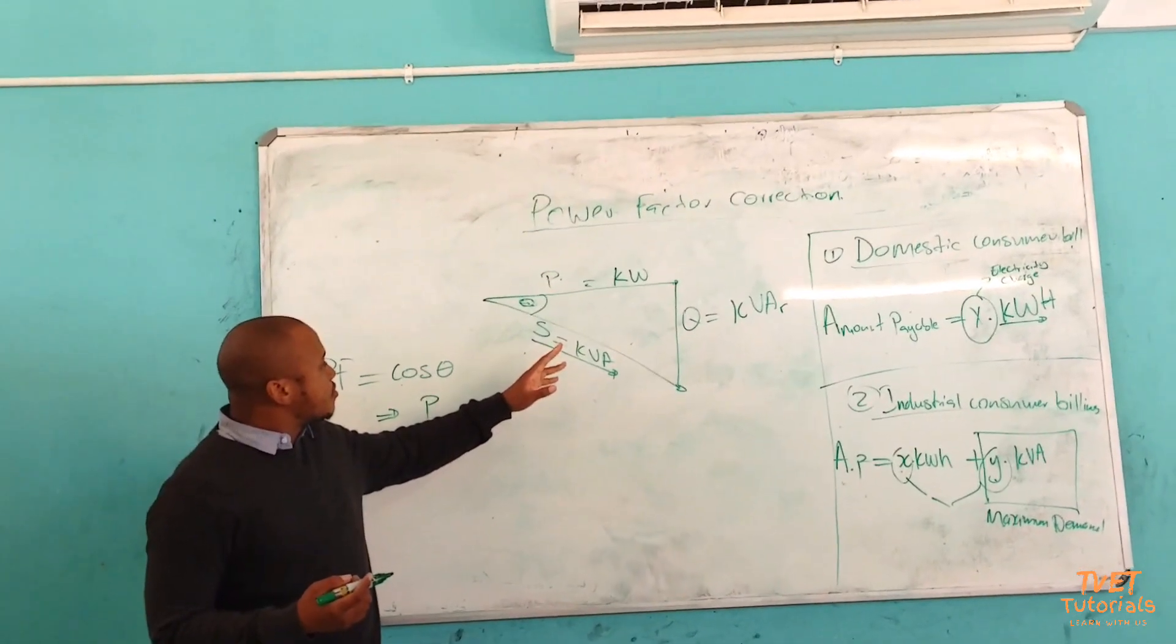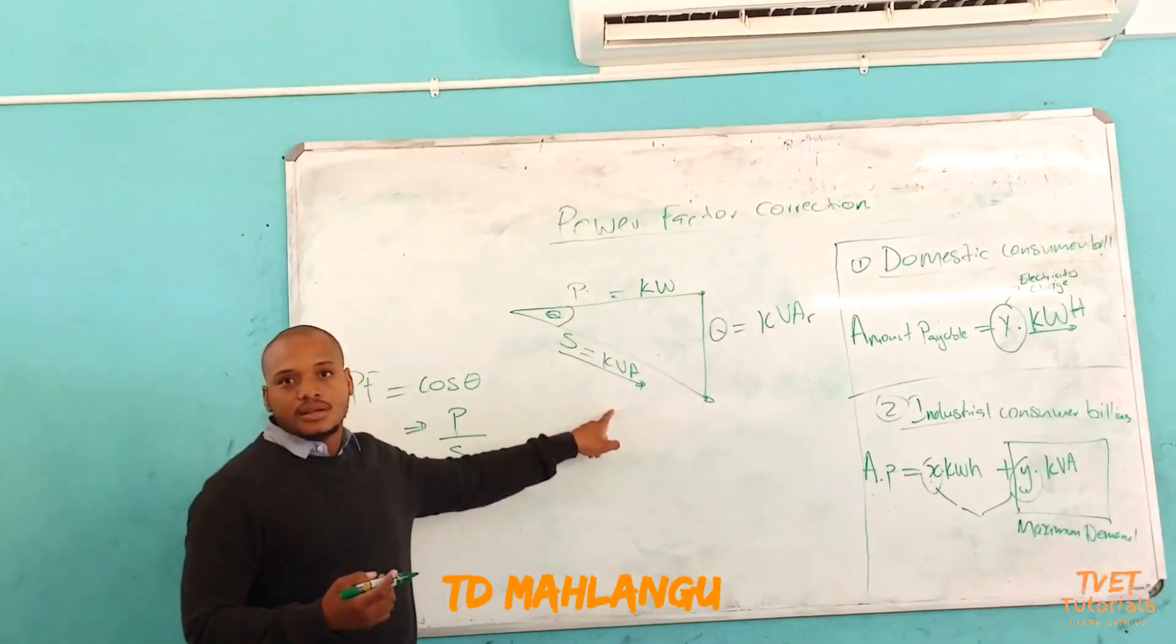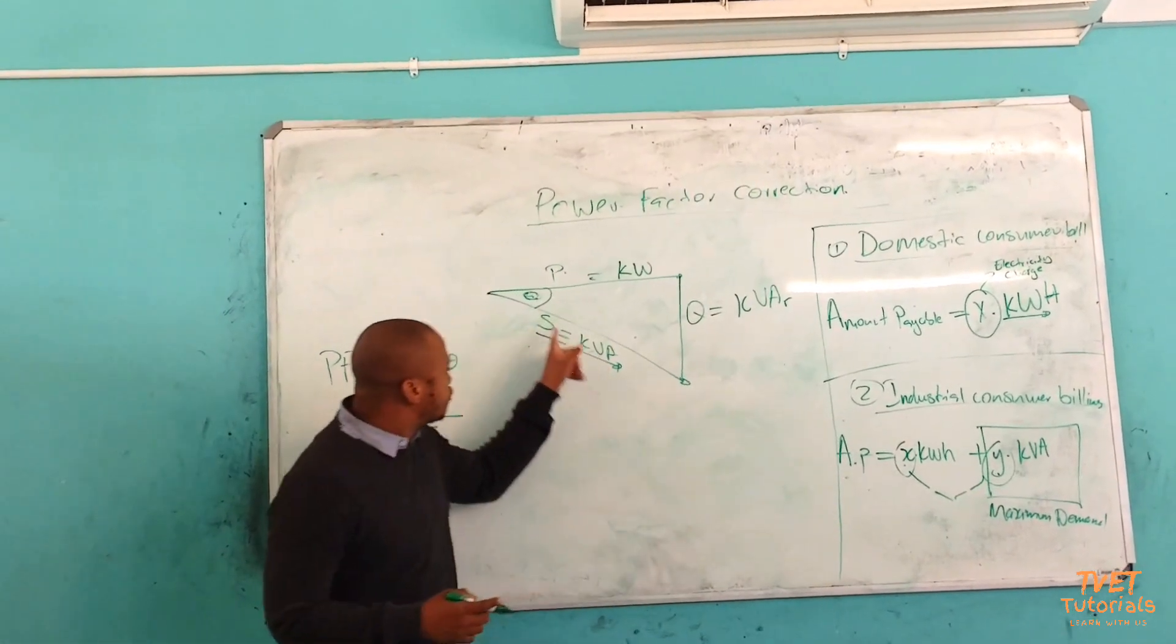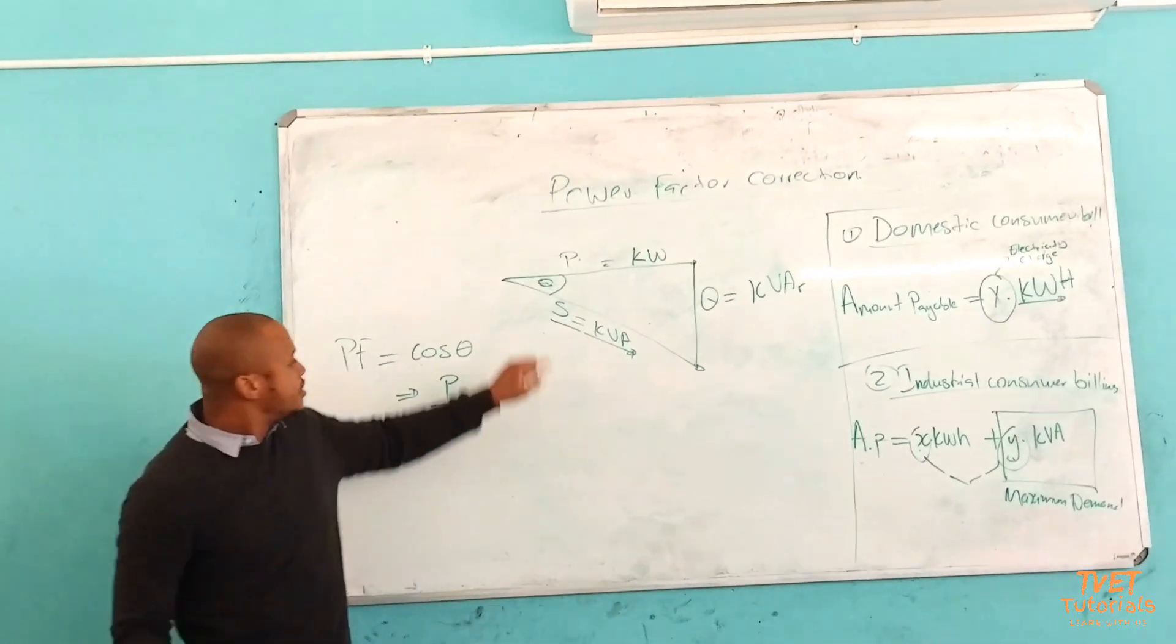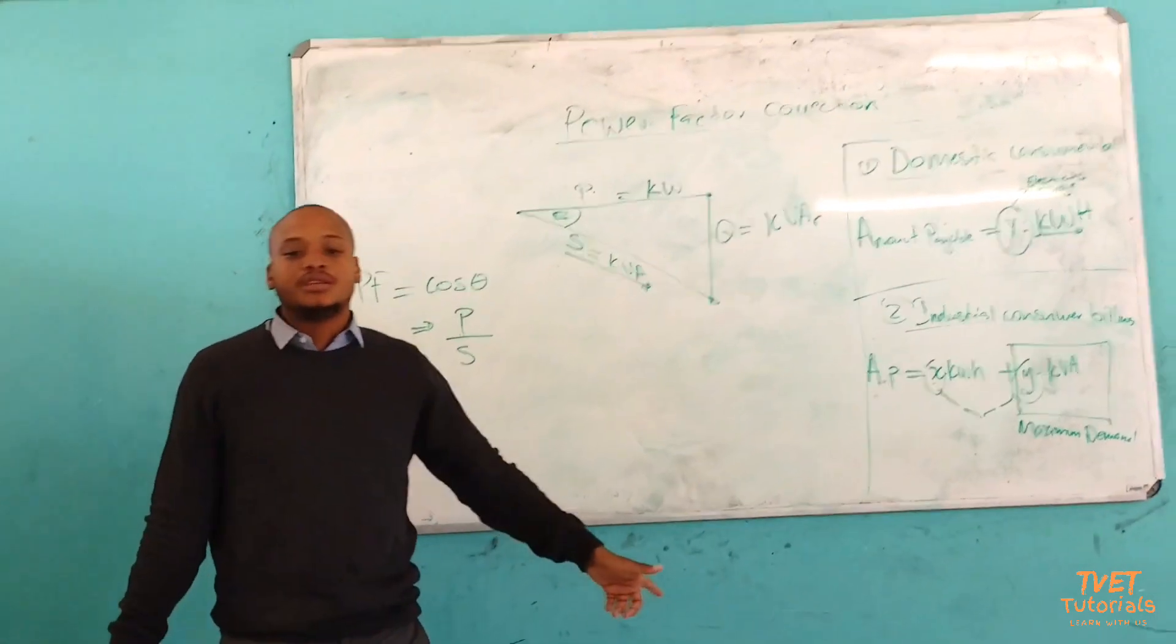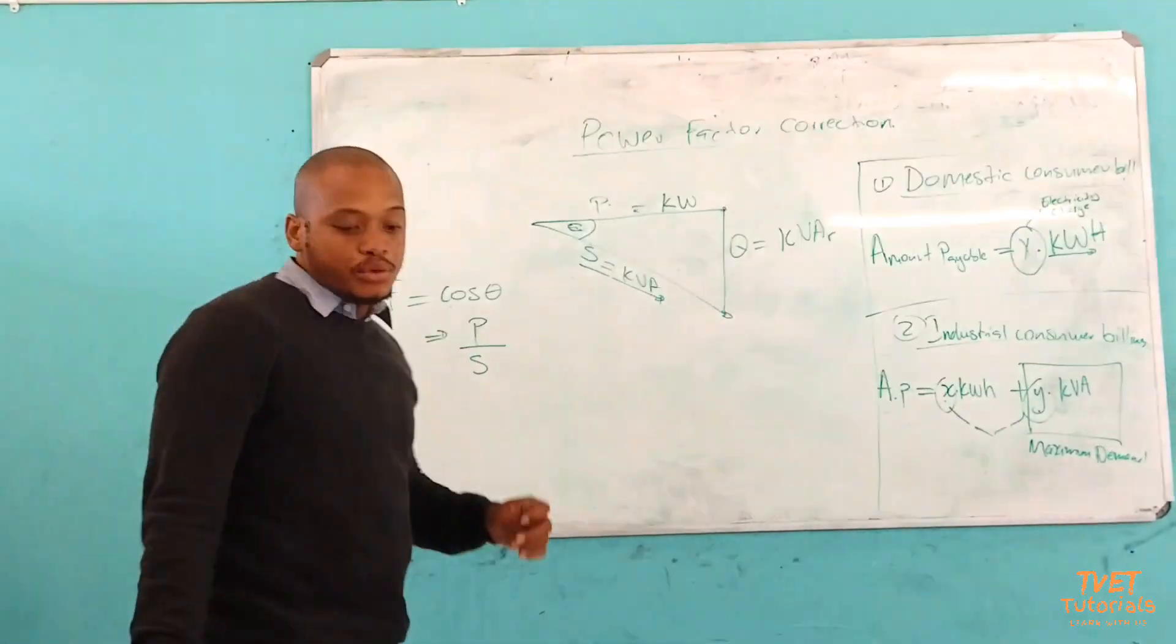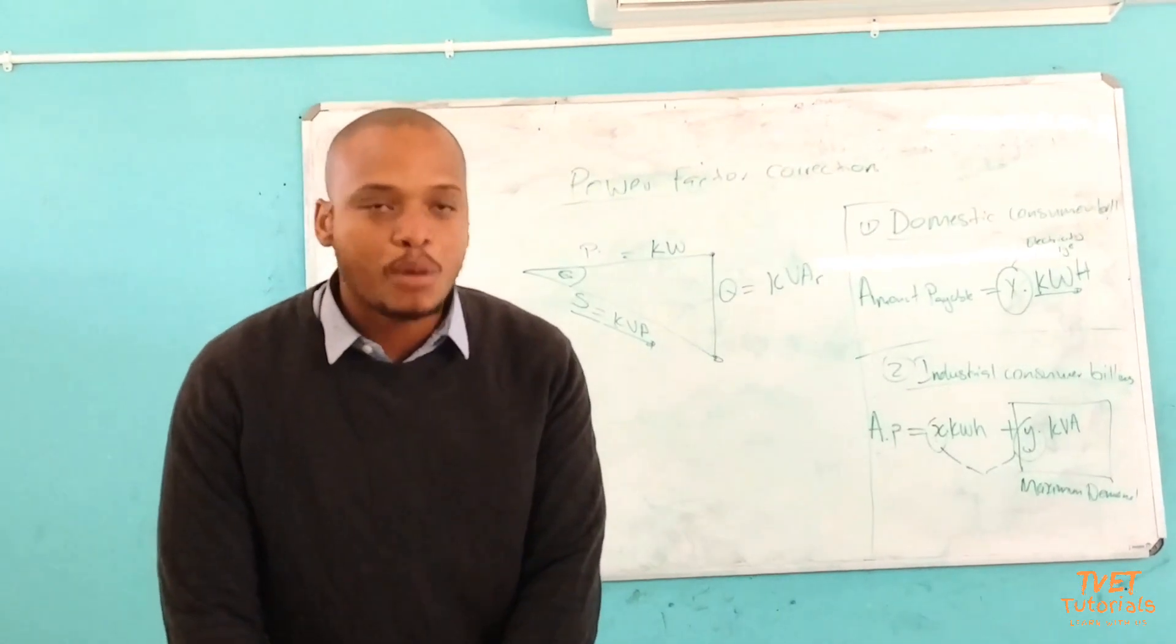If we get this and this, then we can be able to calculate. But how can I reduce this value? Because you can see the KVA has come to reduce. I will reduce that value by reducing the angle theta there. The next calculations that we will be doing, we will be looking into that. I would like us to just make it with two examples, and then we will continue with the power factor calculation.